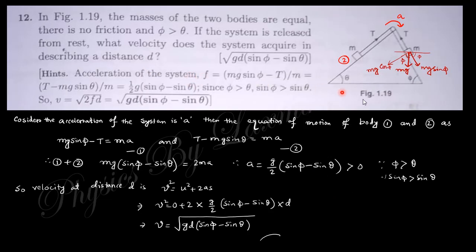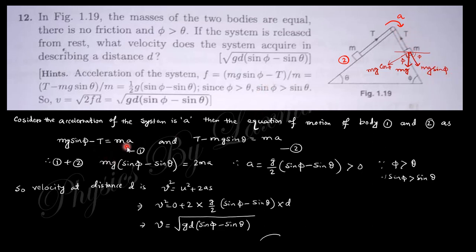The next question says: the masses of two bodies are equal, there is no friction, and angle φ is greater than angle θ. If the system is released from rest, what velocity does the system acquire after describing a distance d? For the equation of motion along the incline, the force component is mg·sinφ, and the tension is T, so: mg·sinφ − T = m·a.